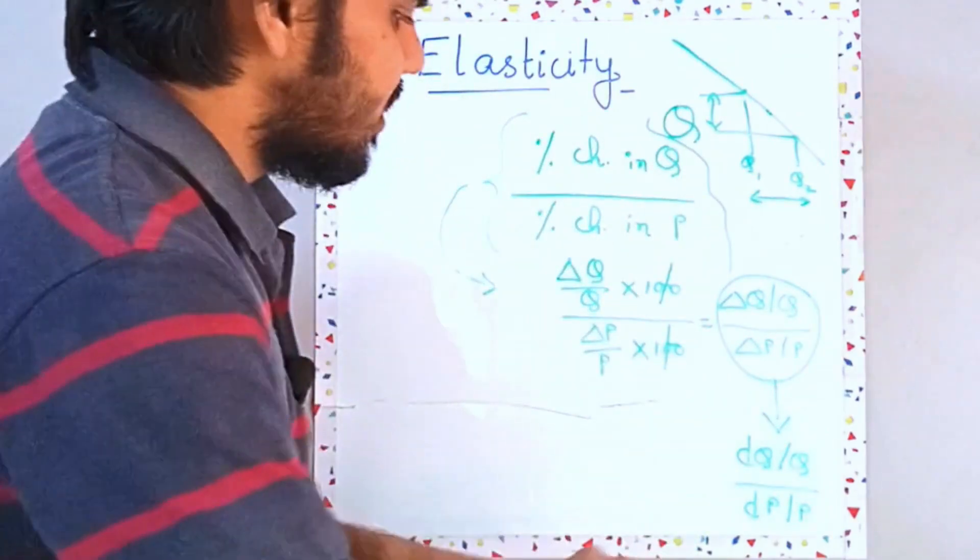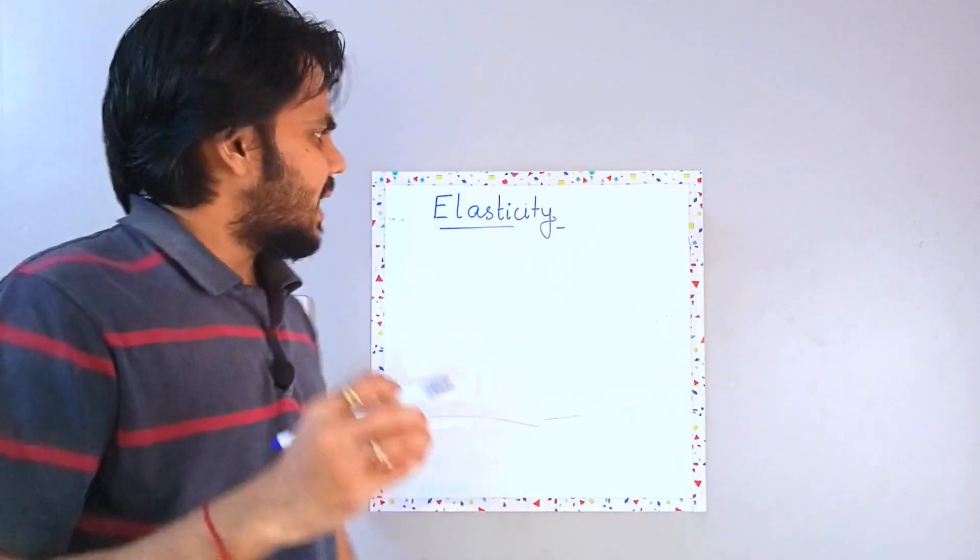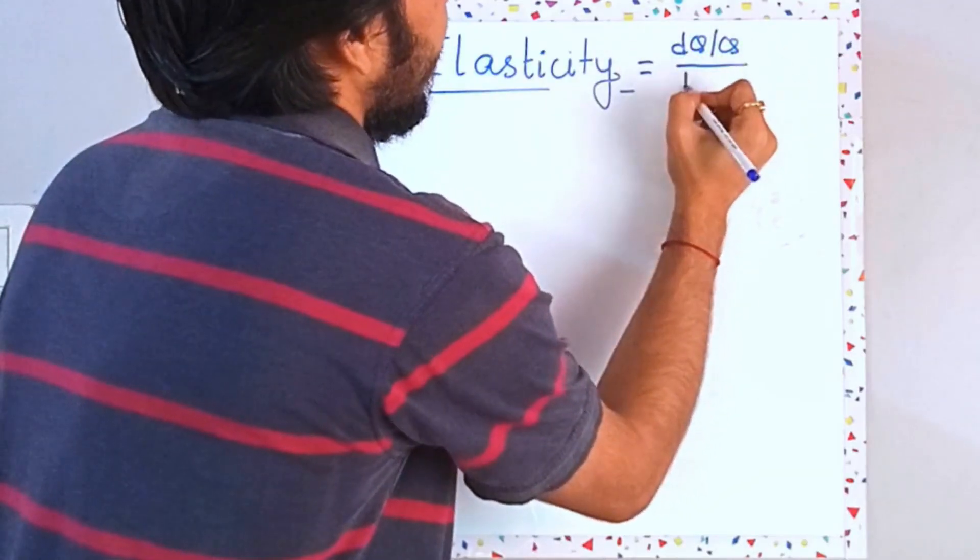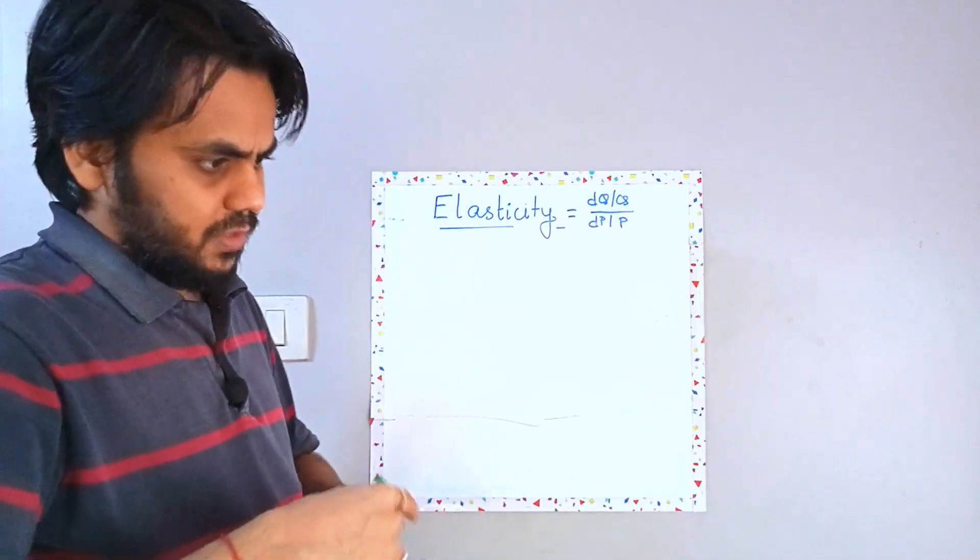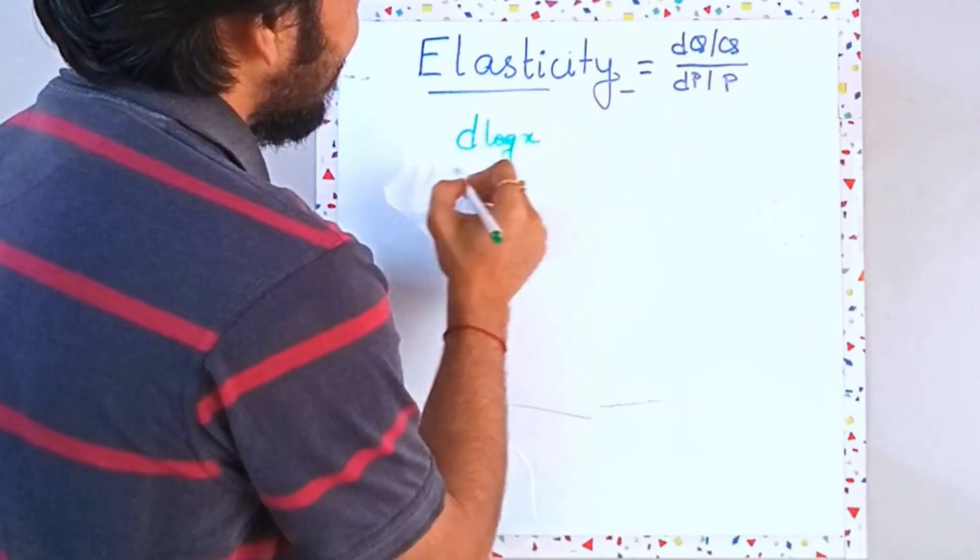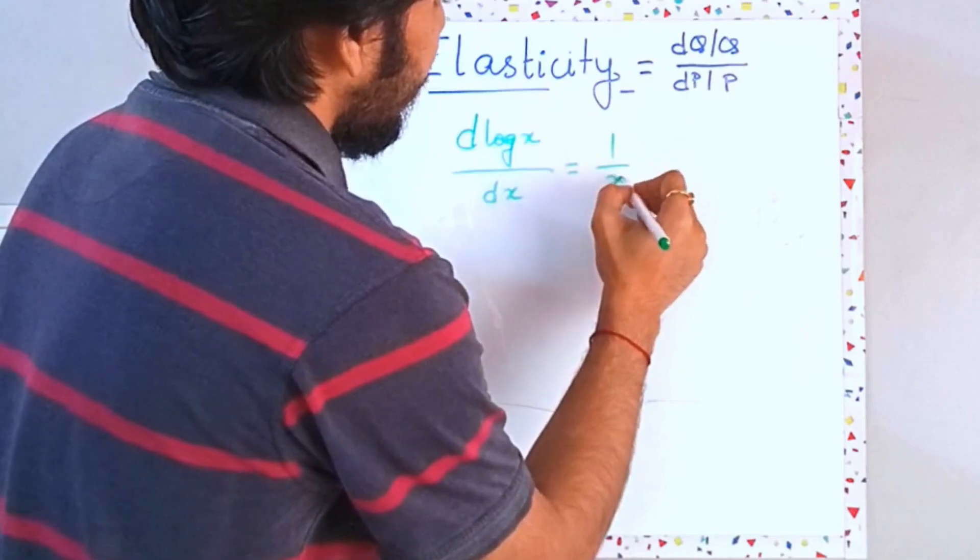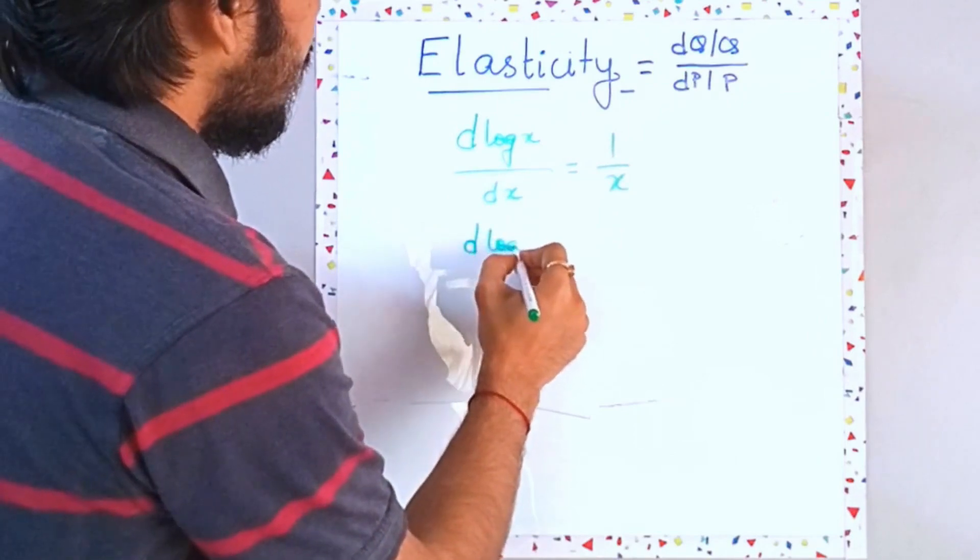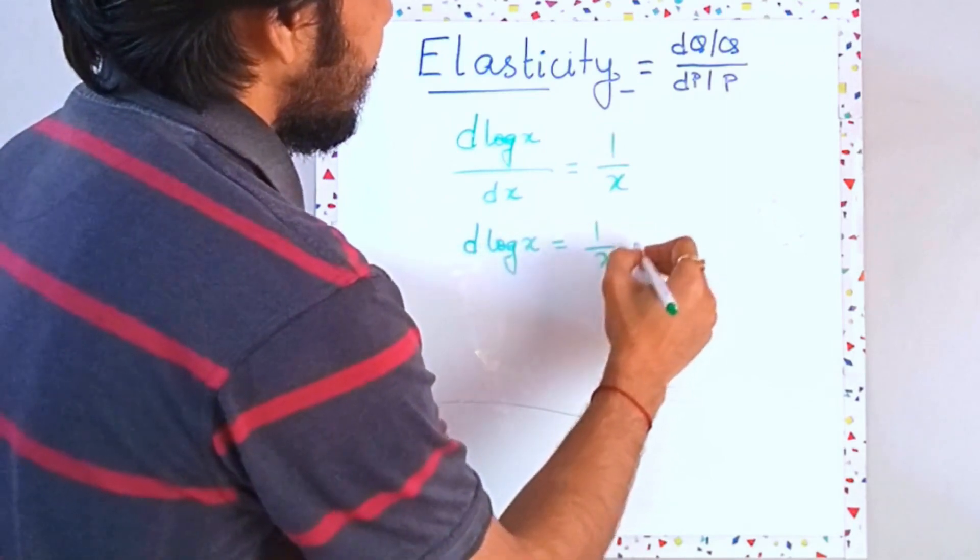So let's just go with this formula and let's try to understand some more ideas about this formula. So we understood that the price elasticity can be written directly as del Q by Q by del P by P. Now there is one thing which you must remember about differentiation that if I differentiate log of x with respect to x, this will be your 1 upon x. What does this mean? This means that D of log x is equal to 1 by x dx.